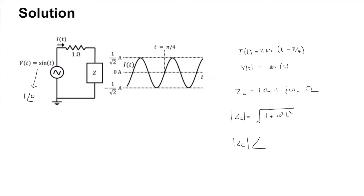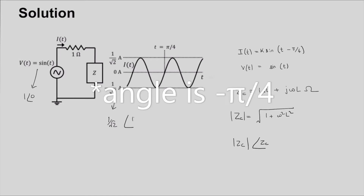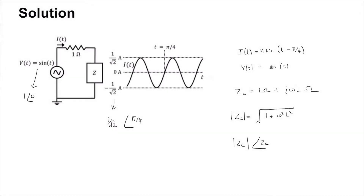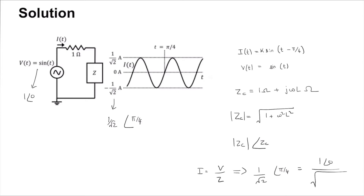The input phasor is 1∠0, the impedance phasor is |Z|∠θ_Z, and the current phasor is (1/√2)∠(-π/4). We can say that I = V/Z, which gives us (1/√2)∠(-π/4) = 1∠0 divided by √(1 + ω²L²)∠θ_Z.